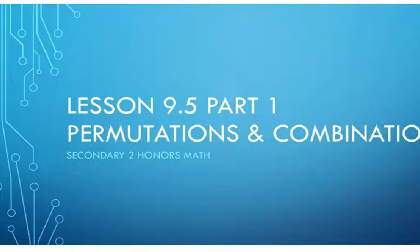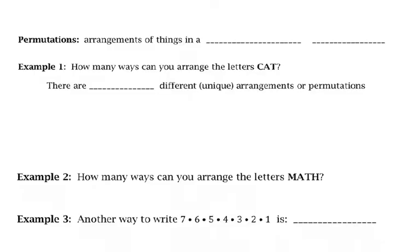This is the lesson for the first part of lesson 9.5 on permutations and combinations. Permutations are arrangements of things in a specific order. So when order matters, we are talking about a permutation.